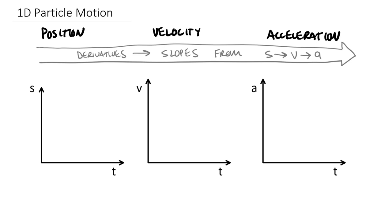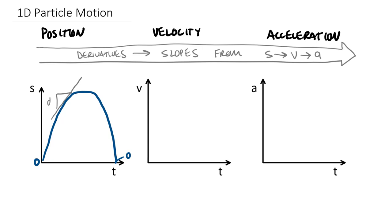Let's say we have a position function — a graph of position as a function of time. This is one-dimensional position, not a two-dimensional graph like projectile motion. Something starts with a positive displacement, reaches some maximum distance, then returns to where it was. S goes from zero to zero over some delta T, some time interval. We can find an instantaneous slope at any point, which is the rise over the run — ds over dt.